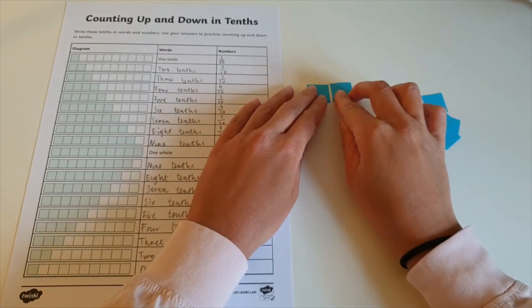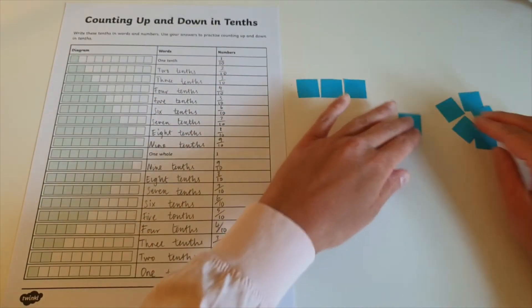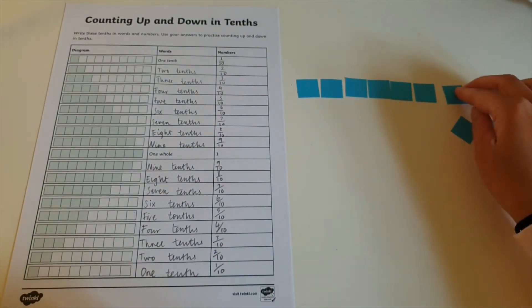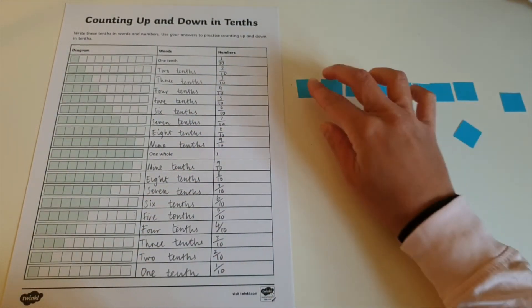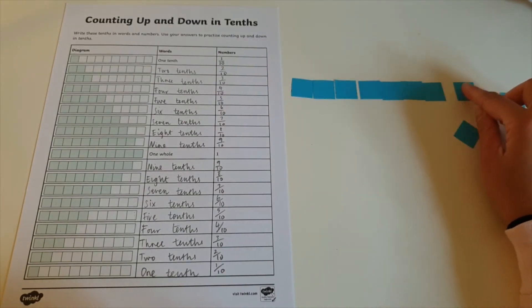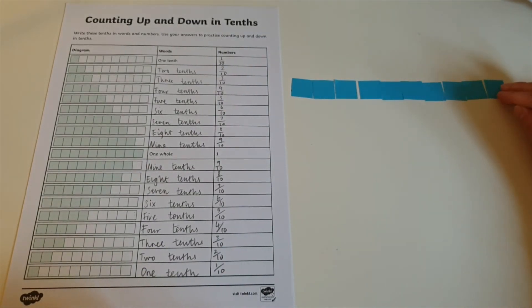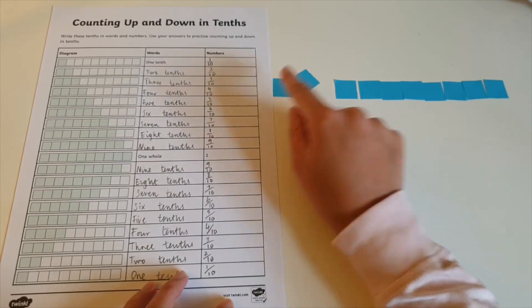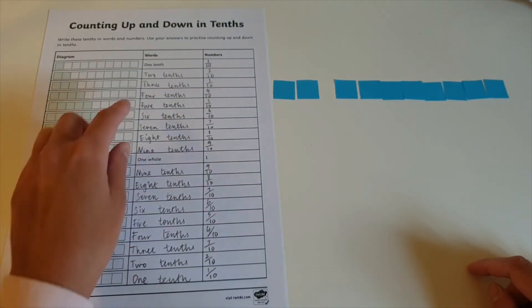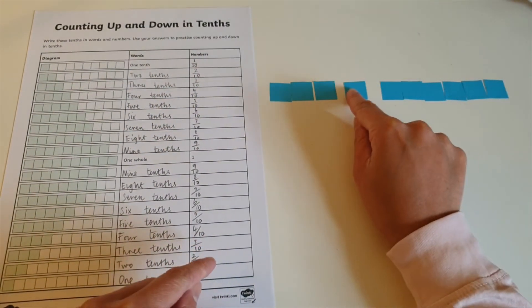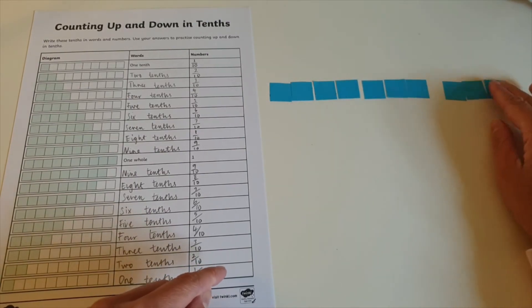And lastly, why not make this a fun investigation task? You could get children to choose a diagram they have completed and draw and shade in shapes to represent the tenths they have identified. Or even use items that you have around and divide equally into tenths. This is a great way for children to realize that any whole shape, when divided equally, can be split into tenths.